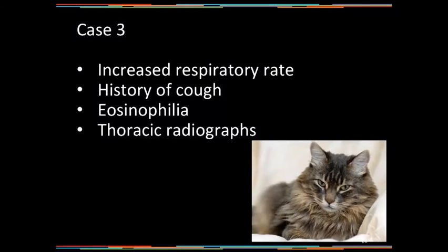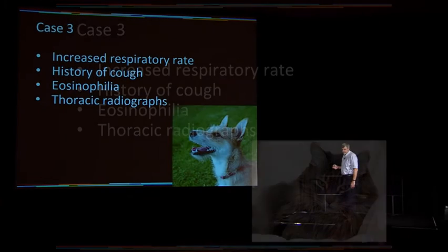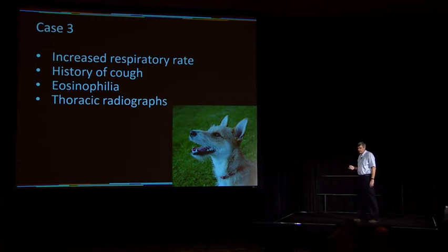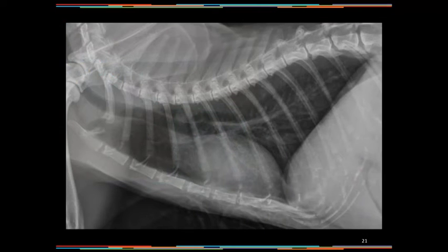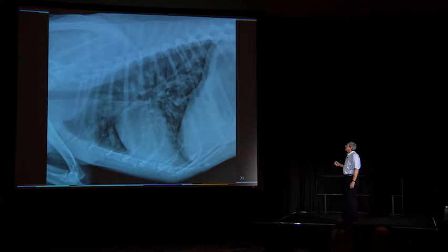Case number three: increased respiratory rate, history of a cough, eosinophilia, and thoracic radiographs were made. In this case, what you see is a diffuse bronchial pulmonary pattern. Remember we had some big vessels coming out to the side and back in the caudodorsal lung fields. But now if I look at it, I can see lots of lines — what the old term was 'train tracks' — lots of rings all the way out here in the periphery.